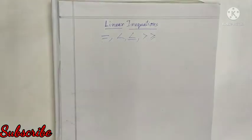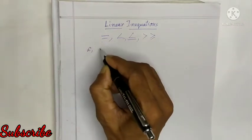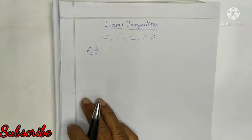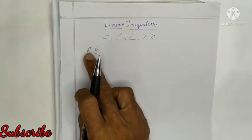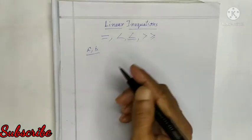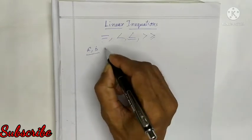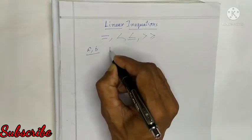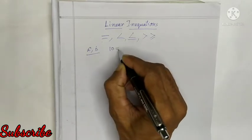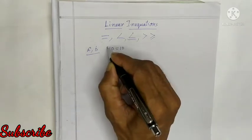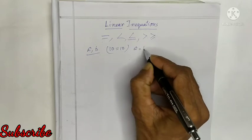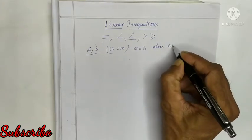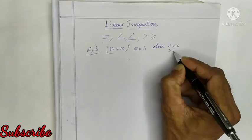If A and B are two real numbers and their value is equal — maybe 10 — then we can write 10 equal to 10, meaning A equal to B, where A equals 10 and B equals 10.